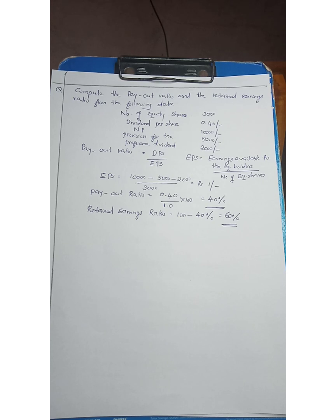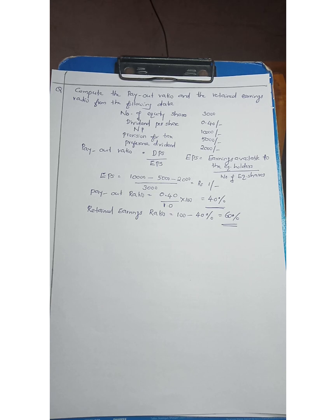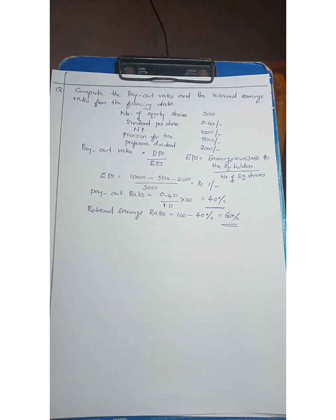Compute the payout ratio and retained earnings ratio from the following data. Payout ratio and retained earnings ratio are market test ratios. The information is: number of equity shares is 2,000, dividend per share is 0.40, net profit is 10,000, and tax is 5,000.